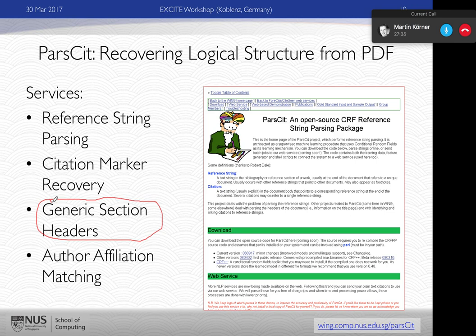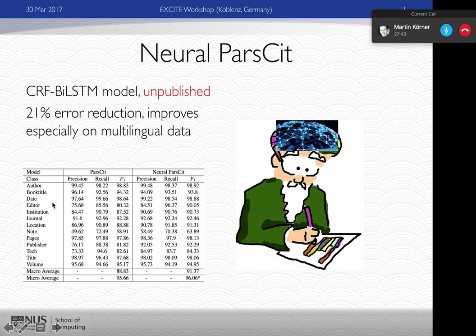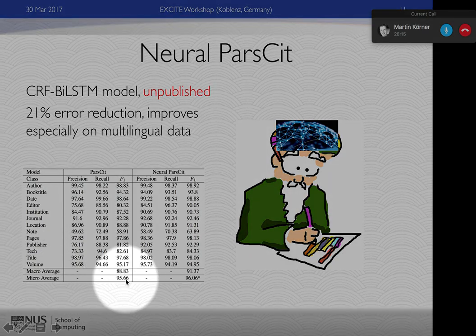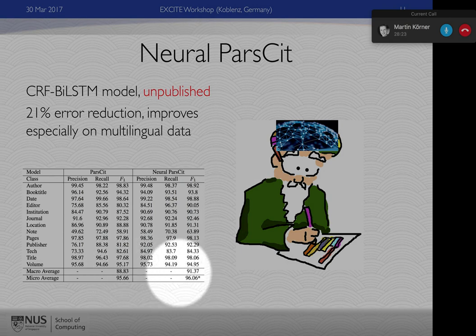Supporting the zoning of a document into generic sections is really critical towards enabling that. Pretty much everyone is going after deep learning, and we're no different — we created a version of ParSight using a CRF model over a bi-directional long short-term memory neural network, currently under review. The micro-level performance improvement is small, but at the macro average, especially for minority classes, there is a fairly big improvement of about 2–3%, which is significant when performance is already quite high.